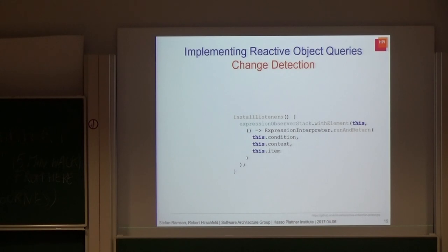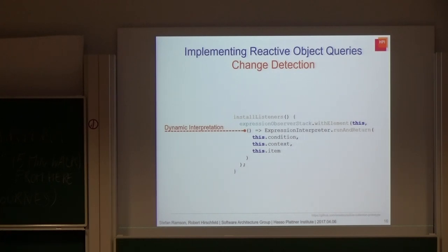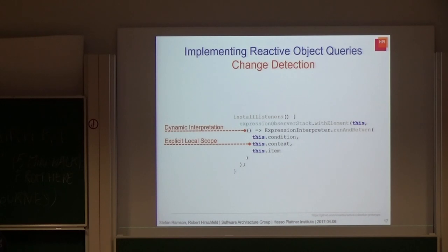Change detection is responsible for detecting any change that might affect the condition for a certain item, which means we need to set up some kind of reactive mechanism to observe our dependencies. Since we are in JavaScript, our condition can include any kind of JavaScript code — we have to deal with nested calls, dynamic dispatch, encapsulation, polymorphism, all that. There is no easy way to determine those dependencies right away. So in order to identify these dependencies, we perform a dynamic interpretation of the condition parameterized with the specific instance. But to interpret the function using a JavaScript interpreter requires access to the local scope of that function, and unfortunately JavaScript does not provide programmatic access to such a scope. Therefore, we now have to manually identify the scope and provide it explicitly for the interpreter.